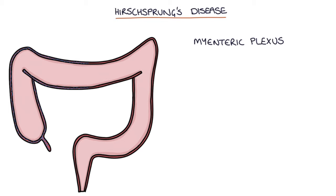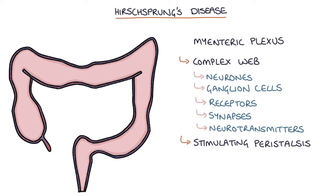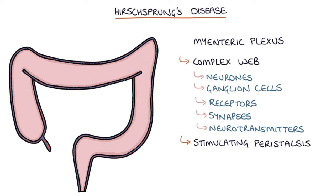This nerve plexus runs all the way along the bowel wall and is a complex web of neurons, ganglion cells, receptors, synapses, and neurotransmitters. It's responsible for stimulating peristalsis of the large bowel. Without this stimulation, the bowel loses its motility and stops being able to pass food along its length.